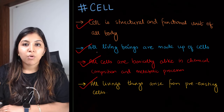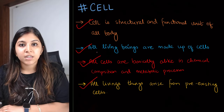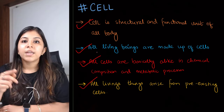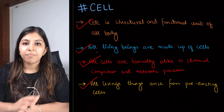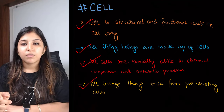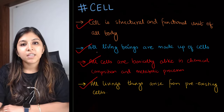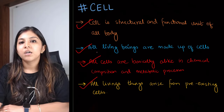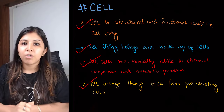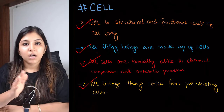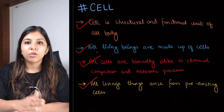Schleiden and Schwann — one was a botanist and the other was a zoologist. What did they observe? They saw that a plant is made up of a number of cells. Similarly, they also saw that animals are also made up of a number of cells, and each one has its own function and they are all working together.